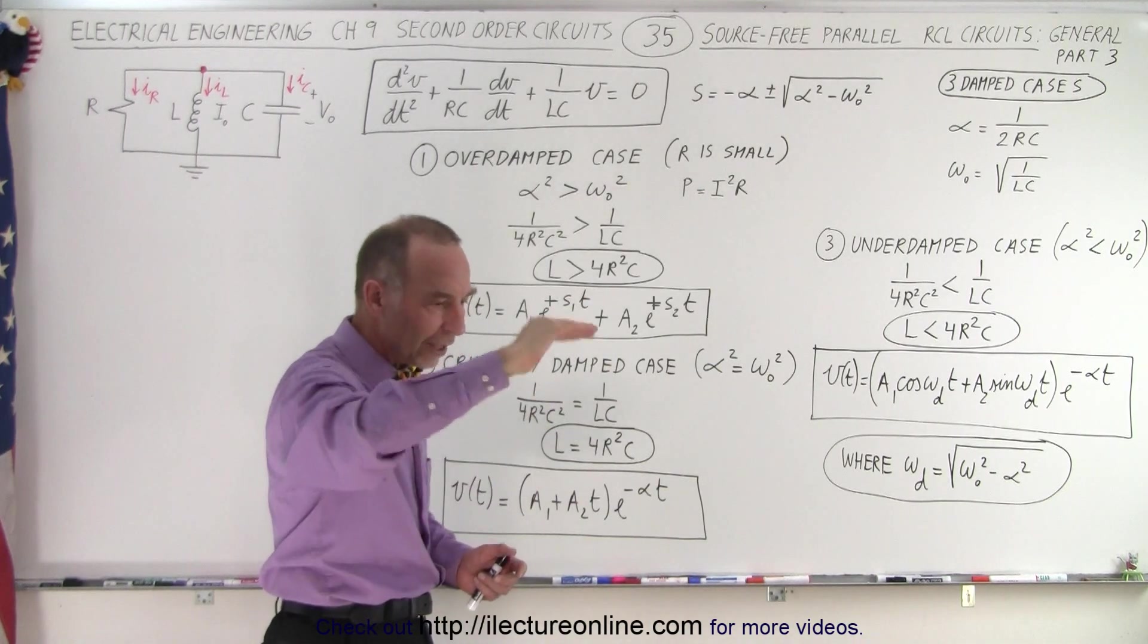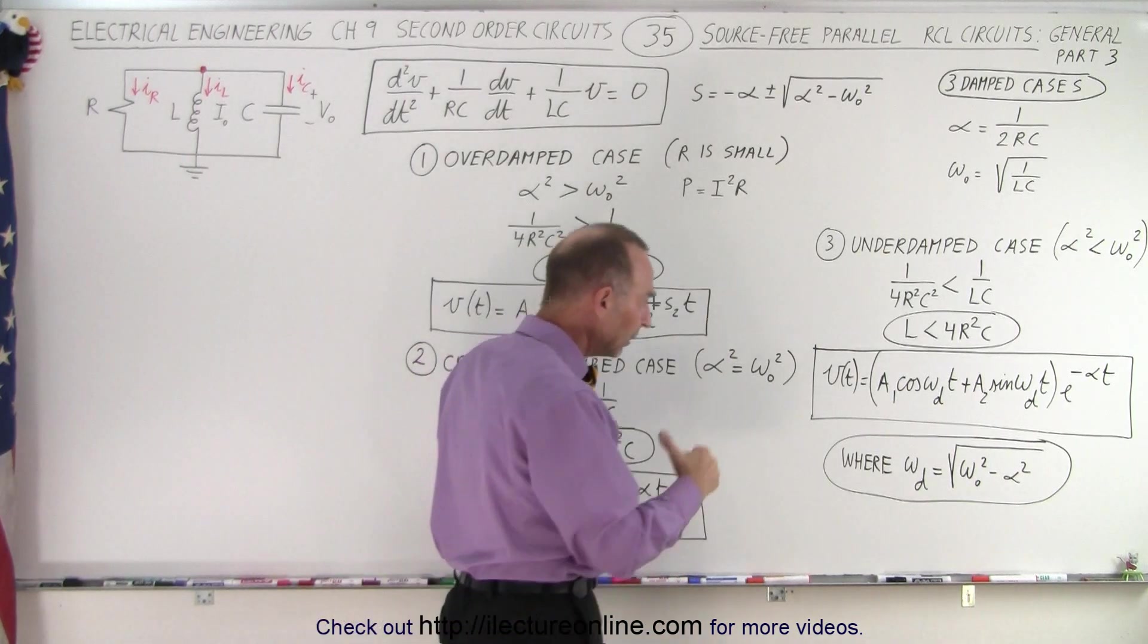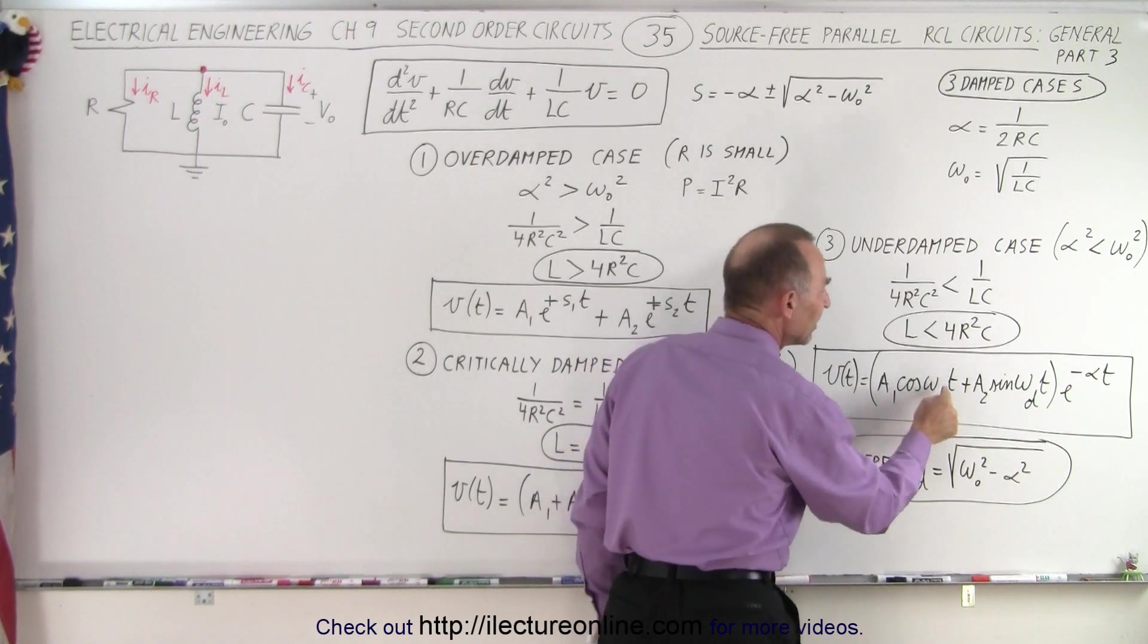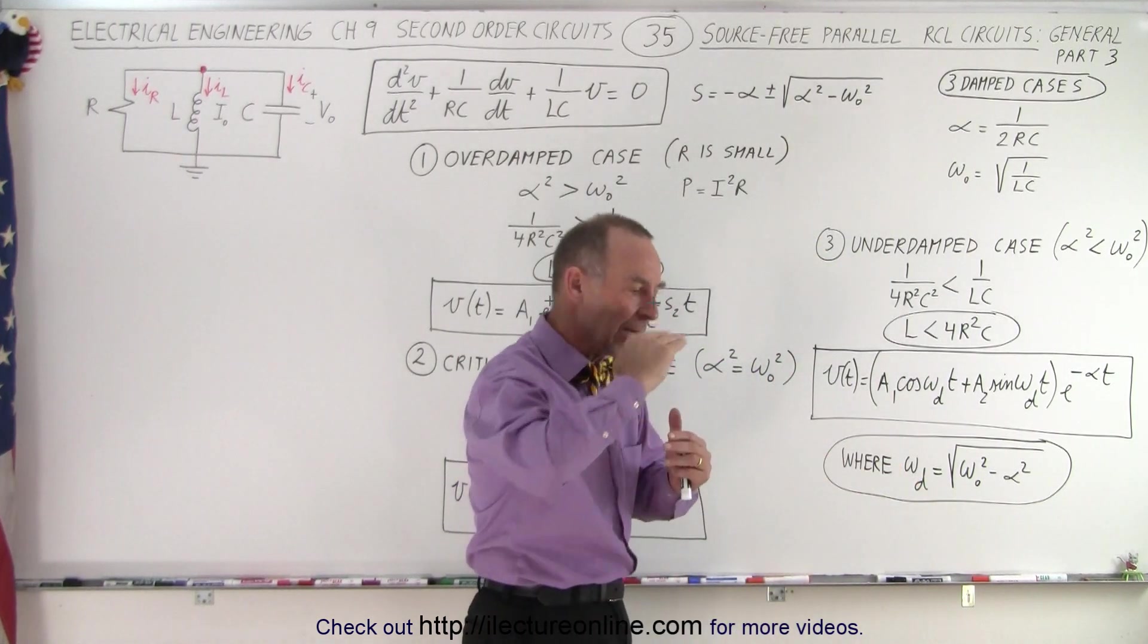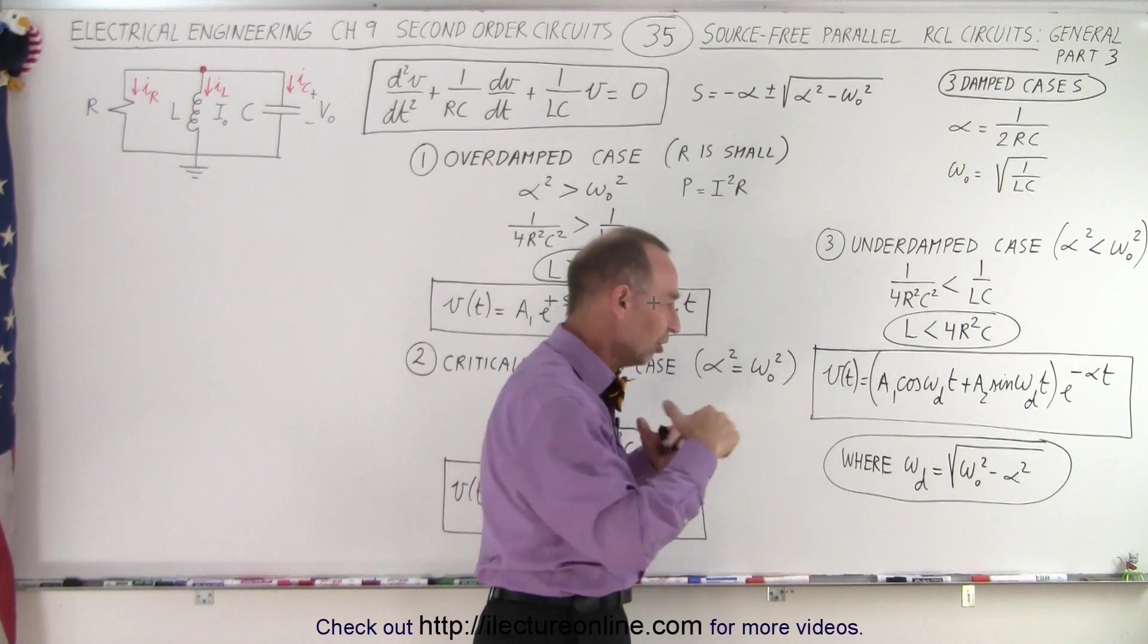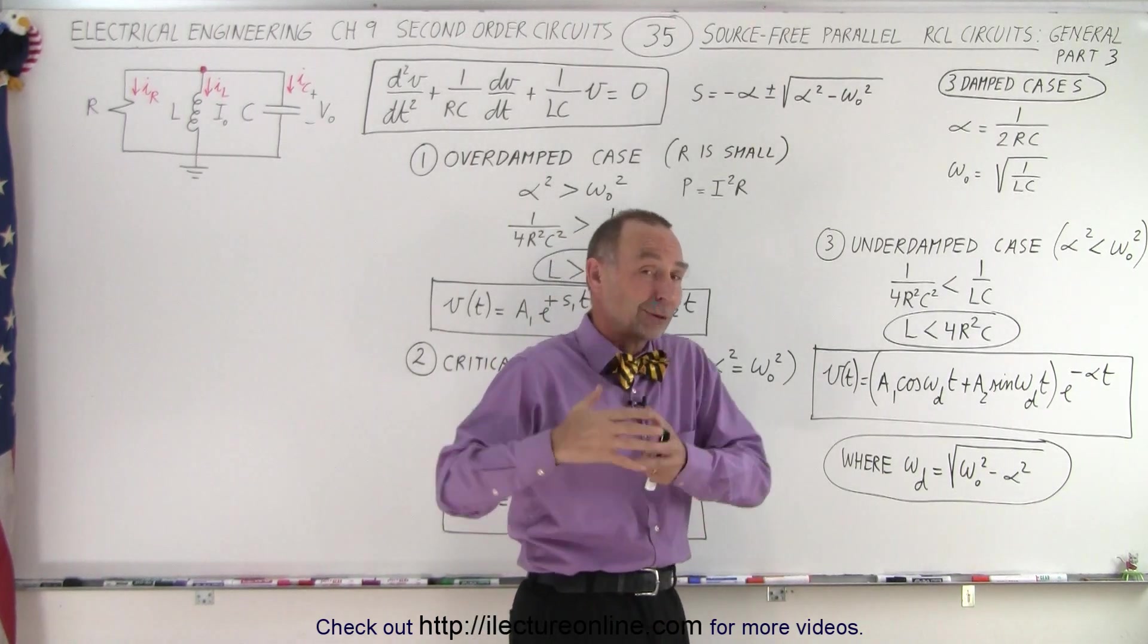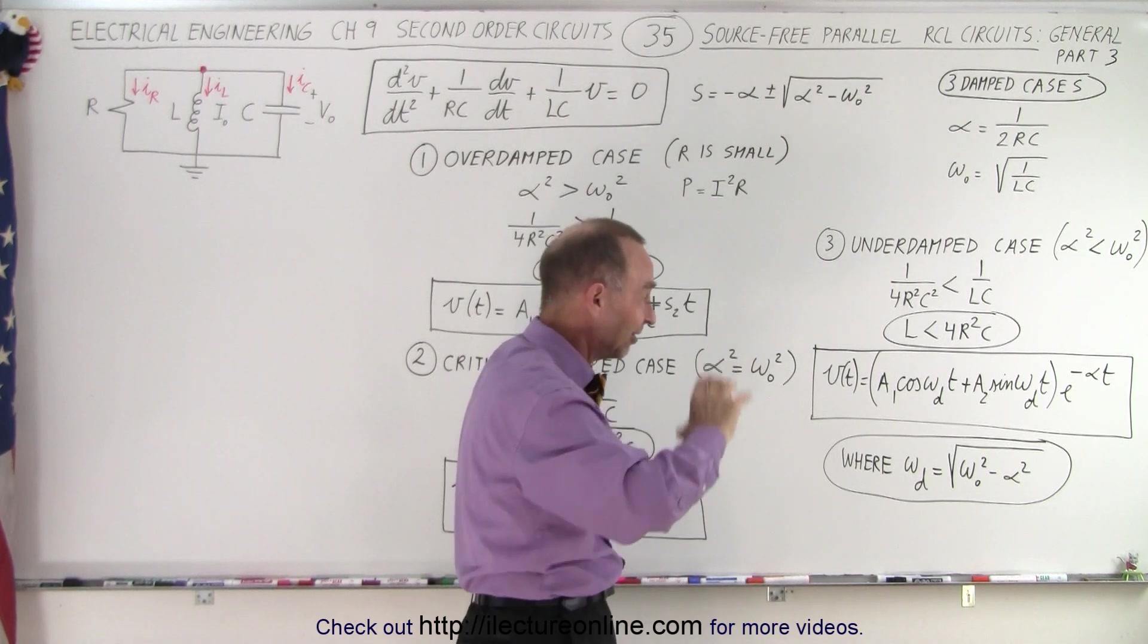In other words, the voltage will oscillate for a while before it settles in. Now, the general solution to the equation, V of T, is equal to A1 times the cosine omega sub dt. Now, what is this here? Well, this is the damped omega. What happens is that the oscillation that happens after we have the initial conditions, and the voltage starts rippling through the circuit, well, I shouldn't say the voltage starts rippling, the current starts rippling through the circuit, and the voltage across the capacitor begins to oscillate back and forth.